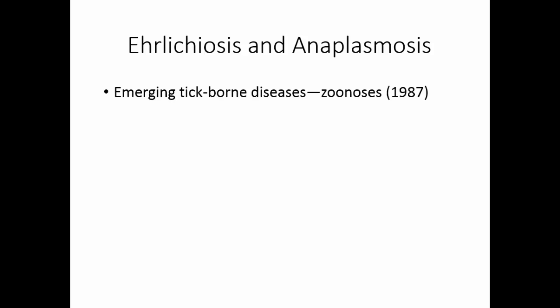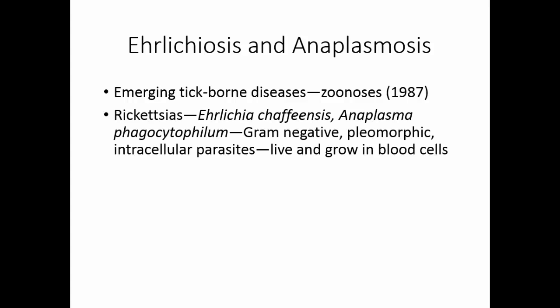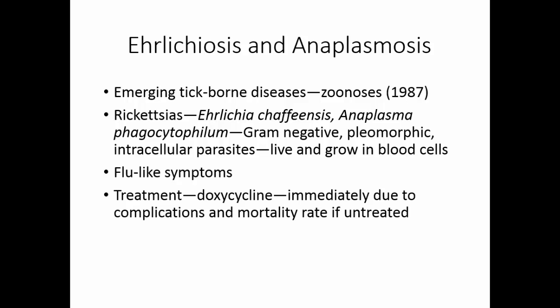Ehrlichiosis and anaplasmosis are emerging tick-borne zoonoses, not seen before 1987. They are caused by Rickettsias — Ehrlichia chaffeensis and Anaplasma phagocytophilum — both gram-negative pleomorphic intracellular parasites that live and grow in blood cells. The diseases present with flu-like symptoms. Treatment is with doxycycline and must be immediate, as there are complications and fairly high mortality rates if untreated. Prevention is avoiding ticks and using tick repellents.